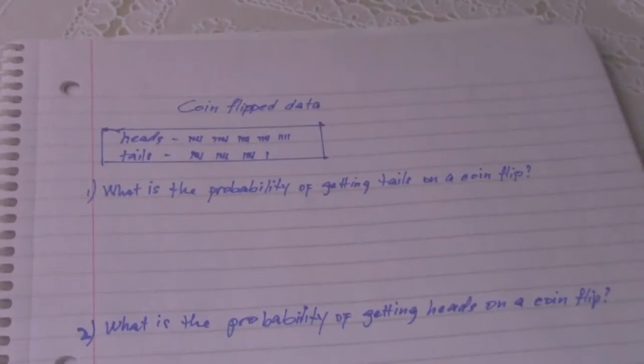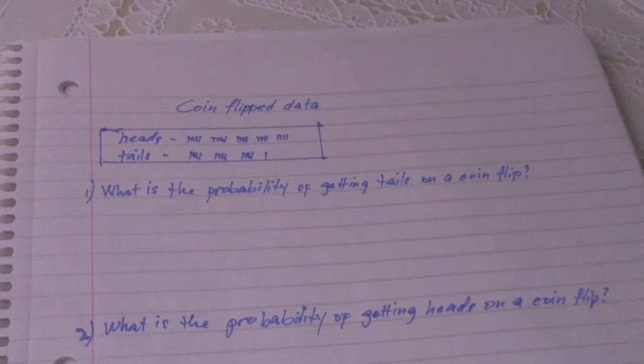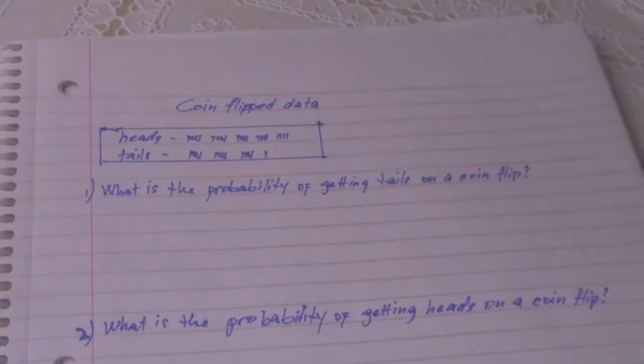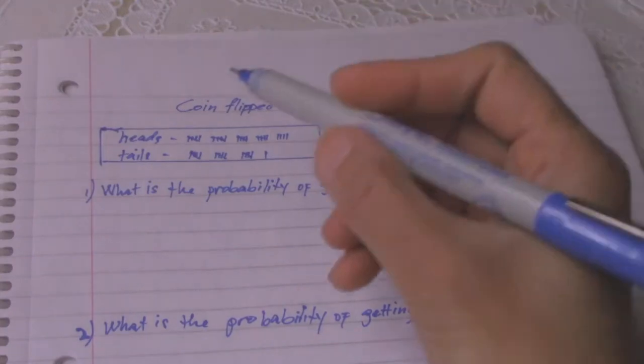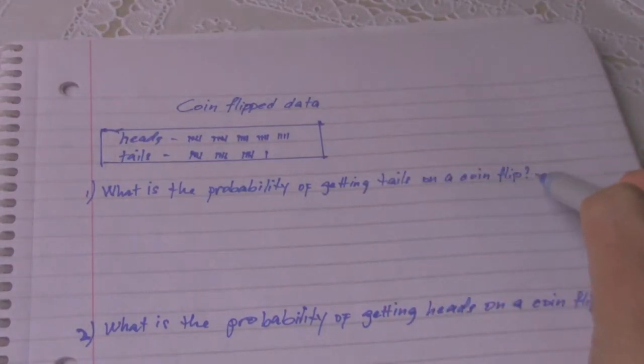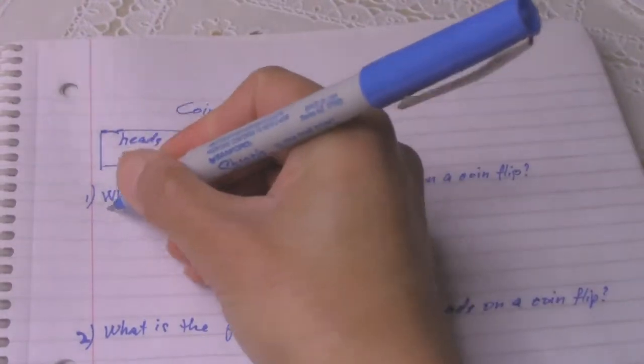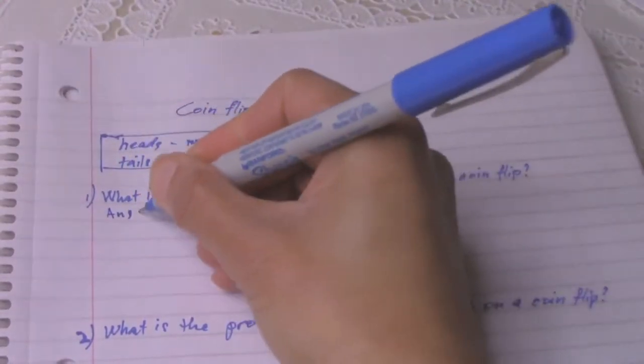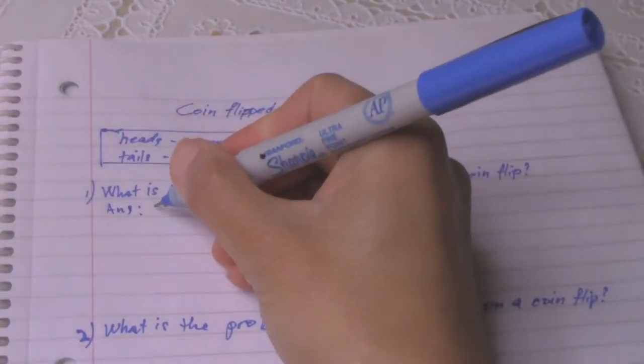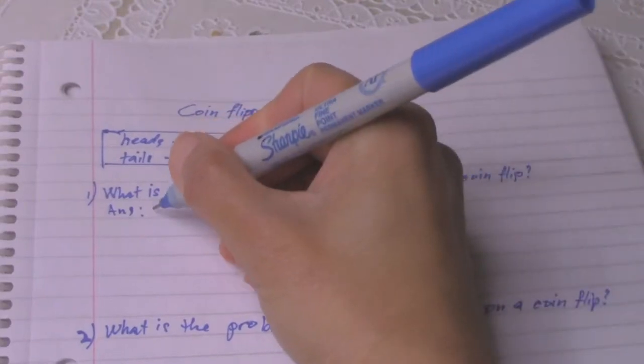Hello guys, this is Bone. Today's video is about GED math examples for probability and percents. I have a coin flip data here. The result of the heads is 24 and the tails is 16. My first question is what is the probability of getting tails on a coin flip? The answer here is 2 out of 5.